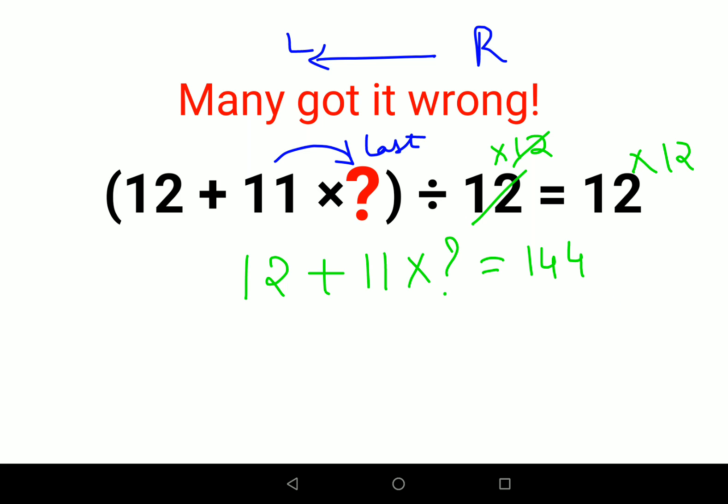Now like I said, the number associated with the question mark has to be taken last. So first what we will do is we will subtract 12 from both sides. This is cancelling and I am left with 11 into question mark equals to 132.